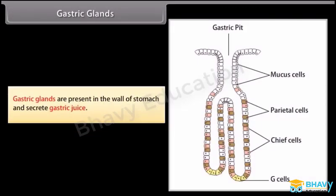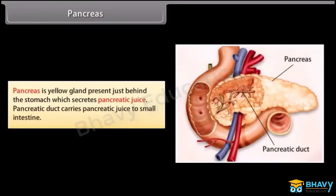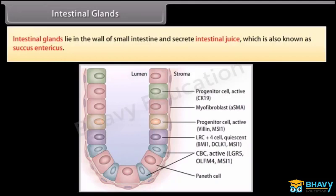Gastric glands are present in the wall of the stomach and secrete gastric juices. Liver is a lobulated, reddish-brown colored, largest gland of the body, present on the right side of the upper abdomen, which secretes bile juice. Pancreas is a yellow gland present just behind the stomach which secretes pancreatic juice. The pancreatic duct carries pancreatic juice to the small intestine. Intestinal glands lie in the wall of the small intestine and secrete intestinal juice, also known as succus entericus.